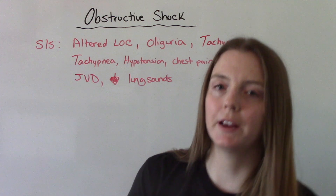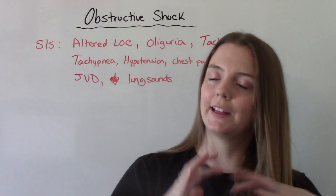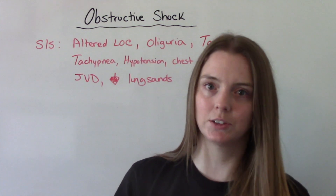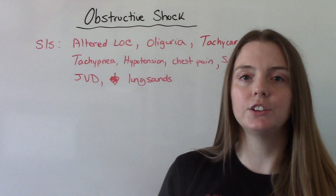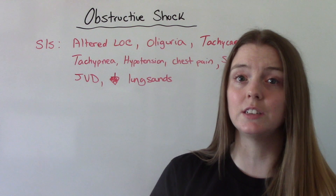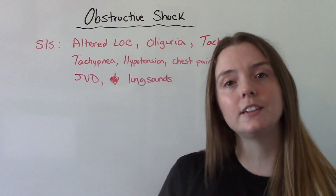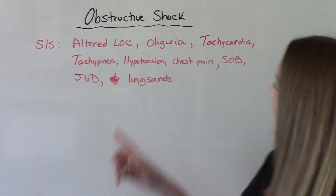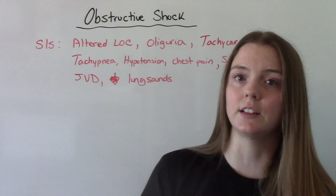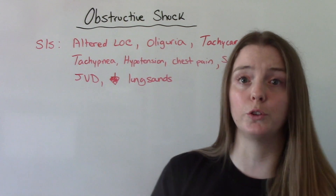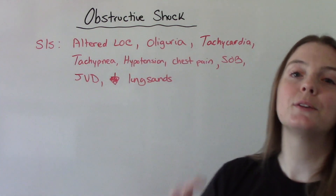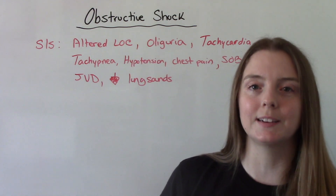The signs and symptoms our patient is going to present with are going to be those classic signs of shock, but also related to the cause. Things like altered level of consciousness — they could be dizzy, lightheaded, confused, drowsy, or unconscious. All of these are related to the lack of oxygen to the brain. Oliguria — little or even no urine output — can happen because the kidneys aren't functioning well as they're not being well perfused. Tachycardia, tachypnea, and hypotension are those classic signs of shock we would expect.